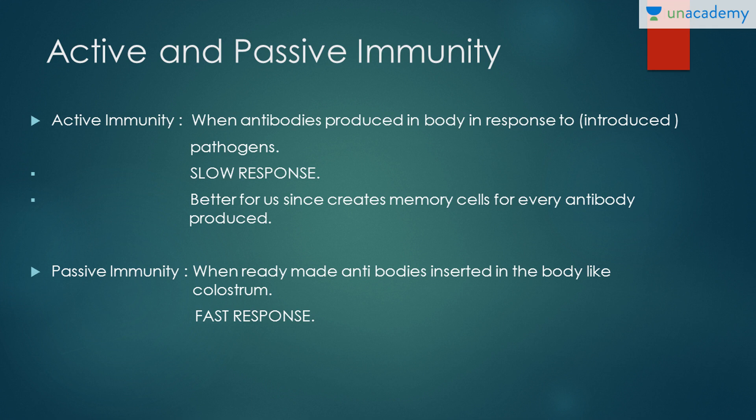In passive immunity, external antibodies are provided to you. A common example: infants are advised to drink milk from their mother, because the first milk — called colostrum, which is yellowish in color — contains an immunoglobulin, specifically IgA (immunoglobulin A), which is a kind of antibody. That is a kind of passive immunity, because your body has not made that particular thing — it is being taken by you. All those antibiotics you take also come under passive immunity. That was the difference between active and passive immunity.